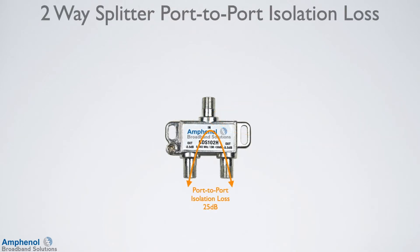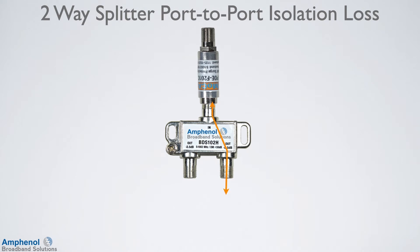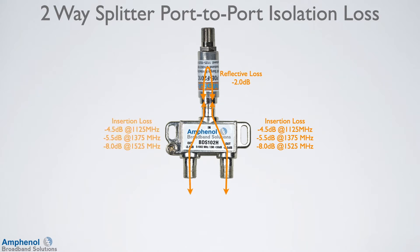Here I'm showing a two-way splitter with a port-to-port isolation loss at 25 dB. By adding a MOCA filter on the input, it changes the MOCA signal path. It first goes through the insertion loss path from the output port to the input, then the signal hits the MOCA filter and reflects back after losing 2 dB, then goes through the insertion loss path from the input port to the other output port. This gives us 11 dB of loss at 1125 MHz, 13 dB at 1375 MHz, and 18 dB at 1525 MHz — a big improvement compared to the 25 dB port-to-port isolation loss without the filter.